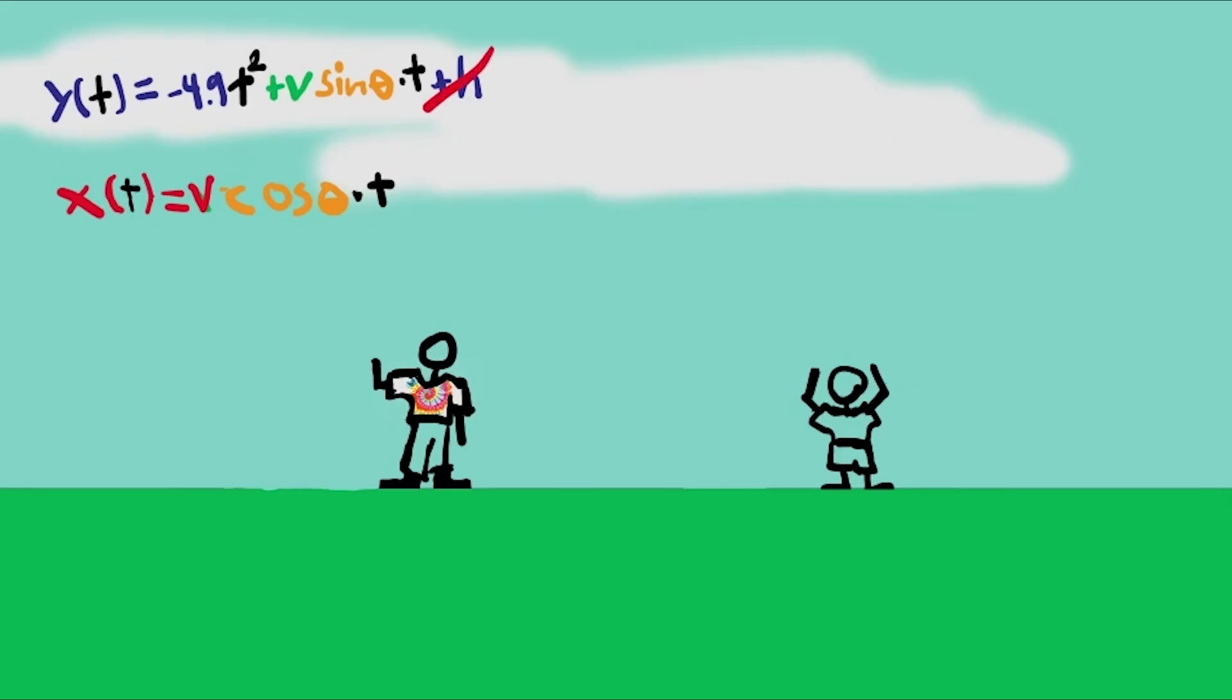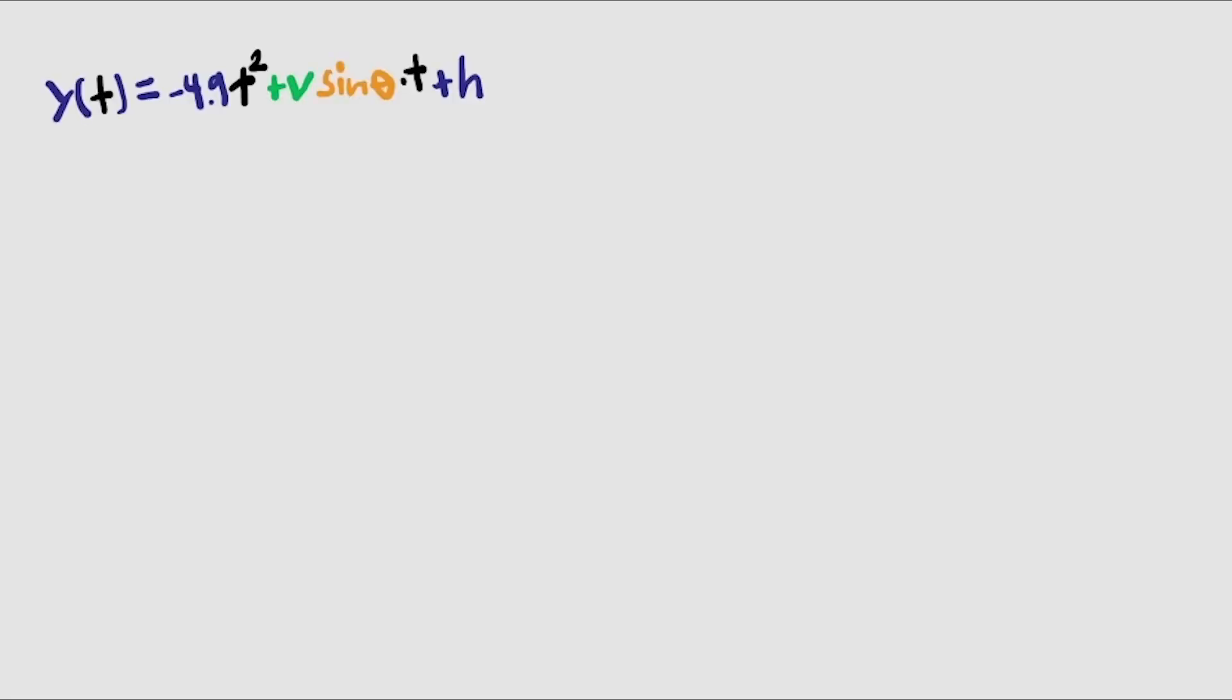They start with the same equations, but to make this easy on us, let's assume that the initial height, h, is zero. So essentially, we're kicking a ball and wanting to know what angle to kick it for it to go the farthest. So, y equals this expression, x equals this expression.